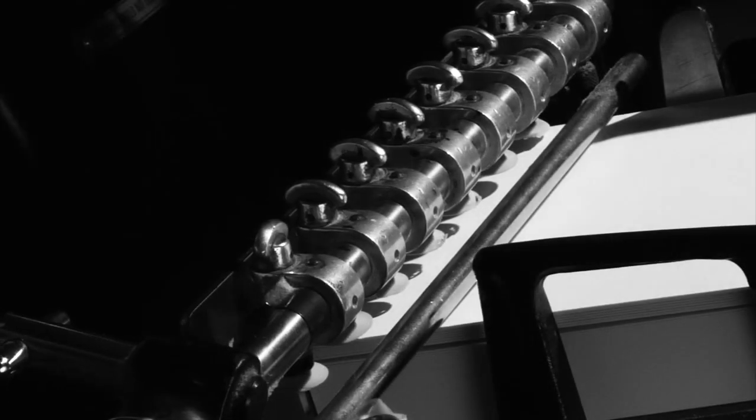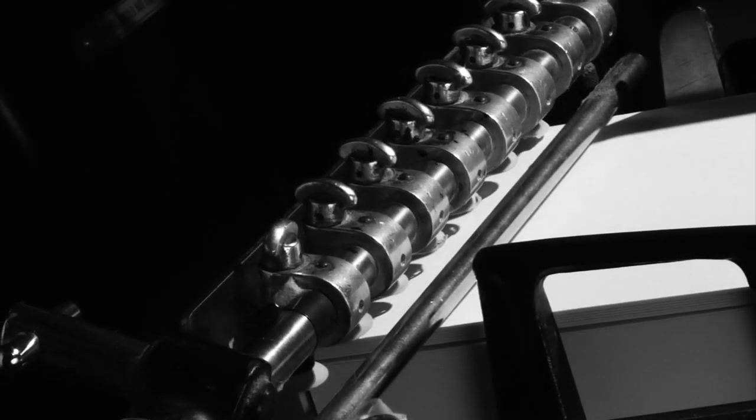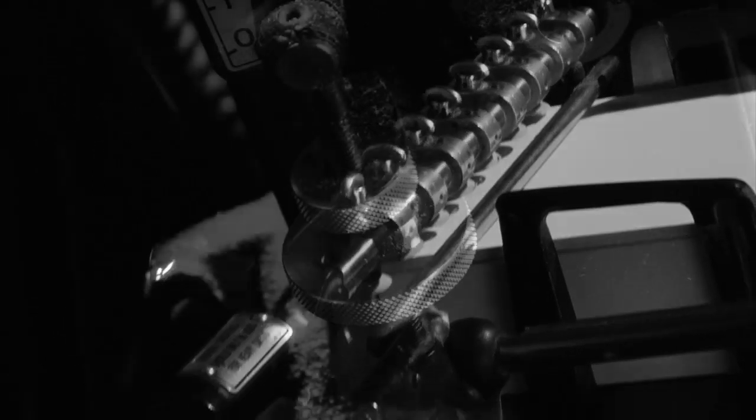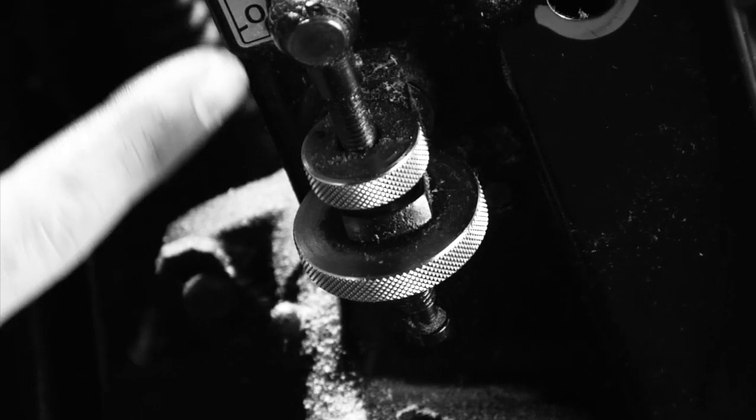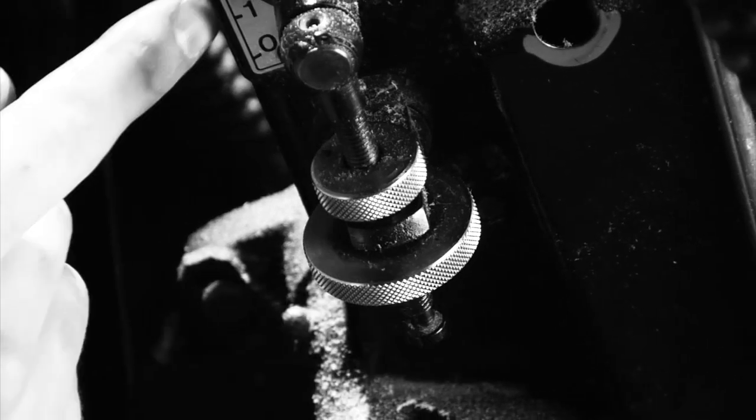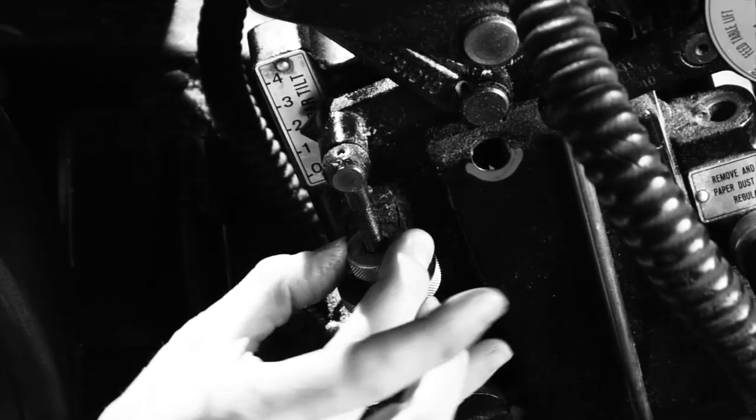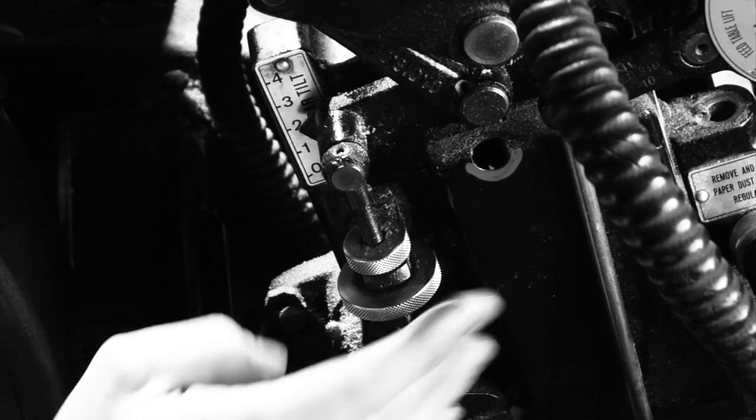You'll want the sucker bar to be at the same angle or tip back slightly more than the fluffed up top sheet. Adjust gripper angle with this wheel. We usually run our sucker bar between two and three, depending on the paper stock. The goal is to peel the top sheet off the sheets below, using the most angle possible. Too much angle and the suckers won't pick up anything.